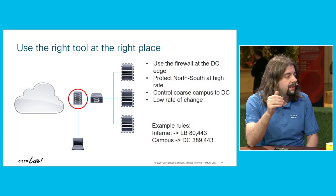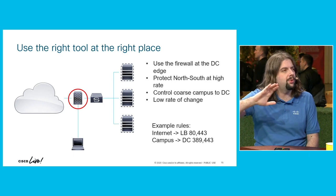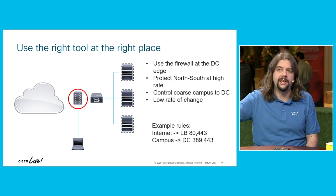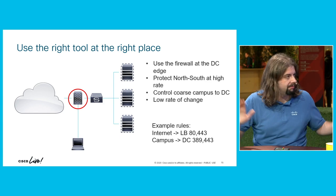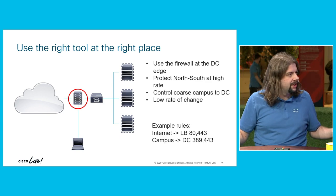The beauty is that if you can get a very low rate of change at the edge and keep a higher rate of change towards the interior of the data center, you actually reduce the risk of breaking everything. What you would do is create some super coarse rules, like: internet is allowed to access my load balancer over port 80 and 443; campus is allowed to access my DC on port 389 and 443. And you don't change it.